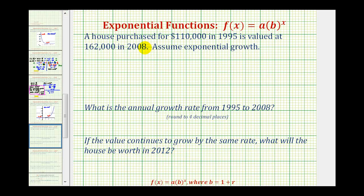So to model the value of the house, we'll use the exponential function f(x) equals a times b raised to the power of x, where b, the base, is equal to 1 plus r, where r is equal to the exponential growth rate or decay rate expressed as a decimal. A is the initial amount or the function value when x equals zero, and x is the exponent, or in this case, x will be the time in years.